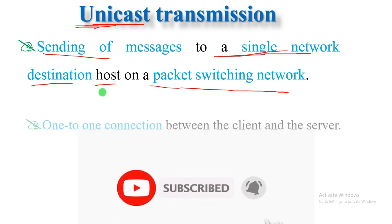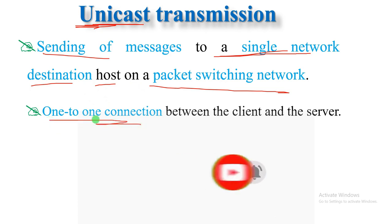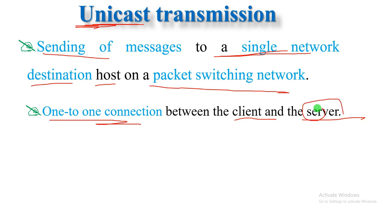So, one-to-one connection between the client and the server. The source, which we call the server, sends data to the destination, which we call the client — that is the receiver. So one-to-one connection between the client and server — point-to-point, one-to-one connection.